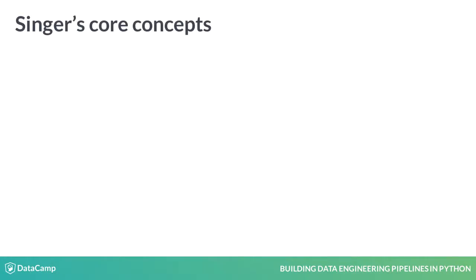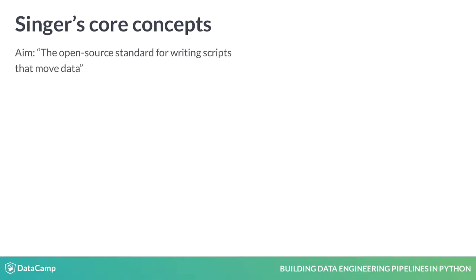We spoke of data pipelines in the previous lesson. They bring data from one place to another, like water and gas pipes. To get data into your data lake, at some moment, you need to ingest it. There are several ways to do so, but it is convenient if within an organizational unit, the process is standardized. That is the aim of Singer as well, to be the open source standard for writing scripts that move data.